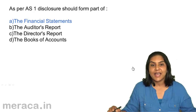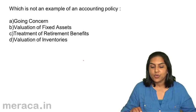Which of the following is not an example of an accounting policy? A. Going concern, B. Valuation of fixed assets, C. Treatment of retirement benefits, D. Valuation of inventories.